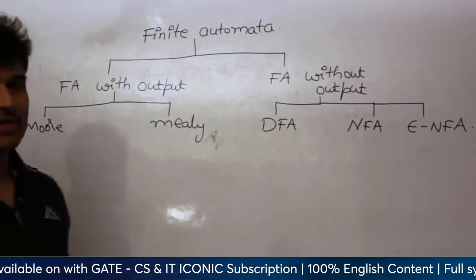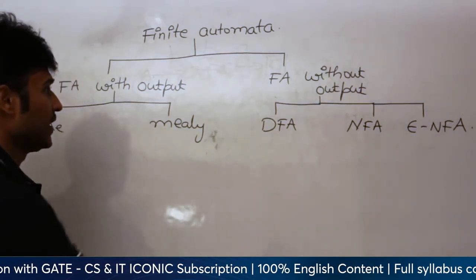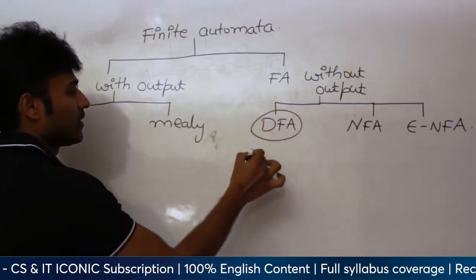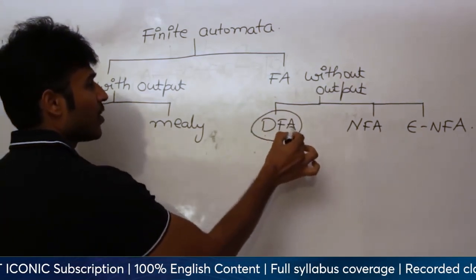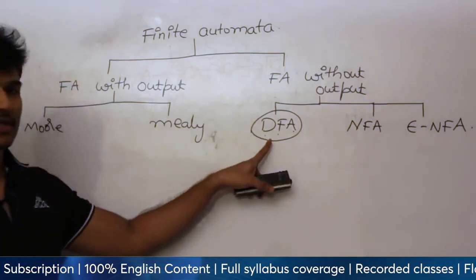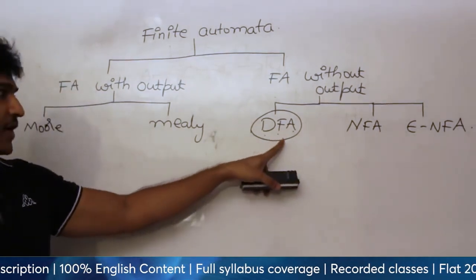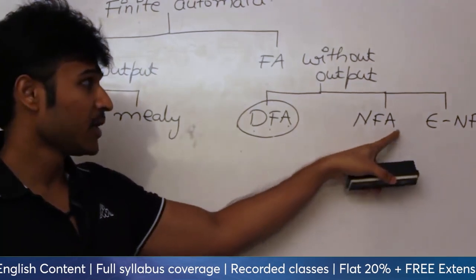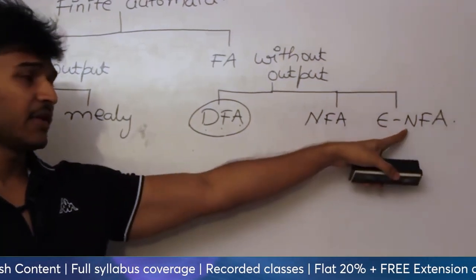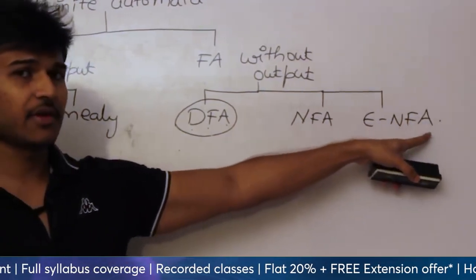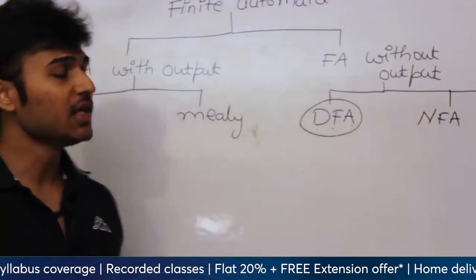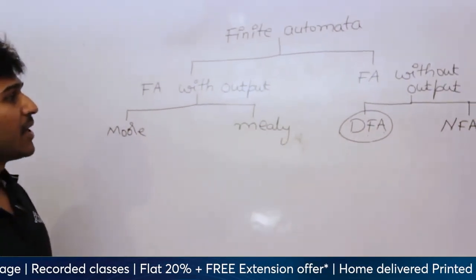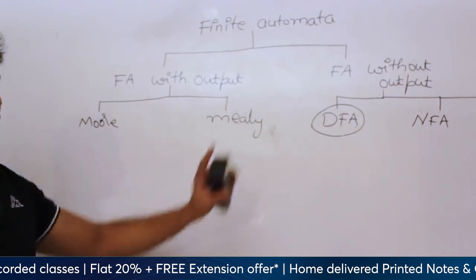The first one I would like to start with is DFA. DFA is nothing but Deterministic Finite Automata. NFA is Non-Deterministic Finite Automata. Epsilon-NFA is Non-Deterministic Finite Automata with Epsilon moves. We are going to discuss each one of them, but I would like to start off with DFA.